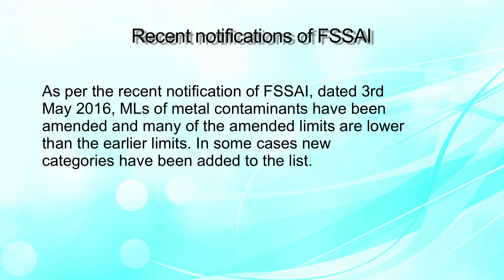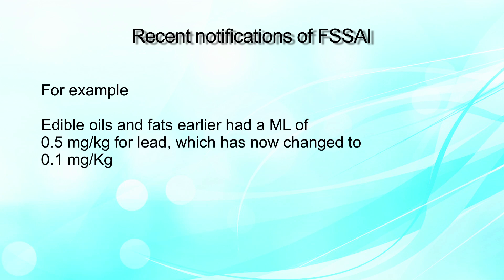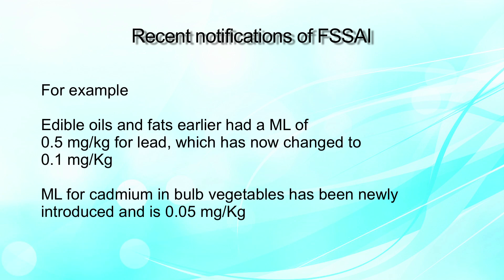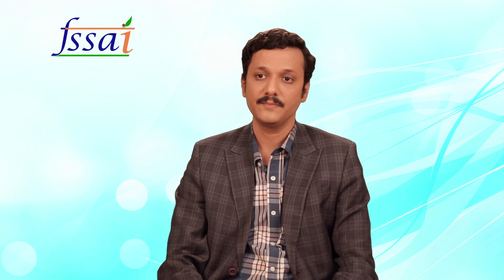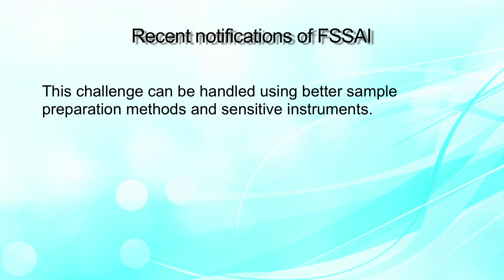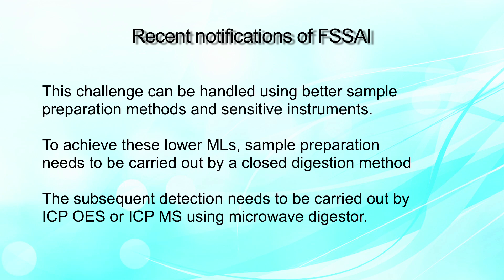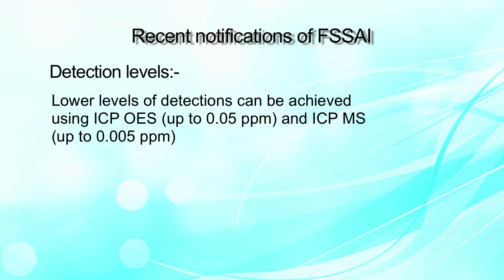Some recent FSSAI notifications dated 3rd May 2016 have defined MRLs of metal contaminants and amended them to be more stringent, including new categories or decreased MRLs. For example, edible oils and fats earlier had an MRL of 0.5 ppm for lead, and it has now been changed to 0.1 ppm. The MRL for cadmium in bulk vegetables has been newly introduced at 0.05 mg per kg. Achieving these lower MRLs is a challenge that can be met using ICP-OES and ICP-MS with better sample preparation methods and more sensitive instruments. Lower detection levels can be achieved using ICP-OES down to 0.05 ppm and ICP-MS down to 0.005 ppm.